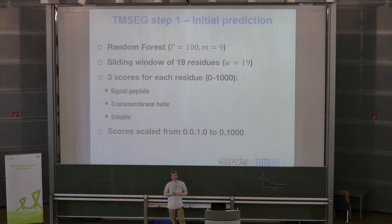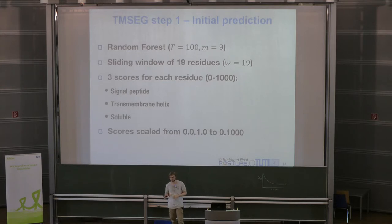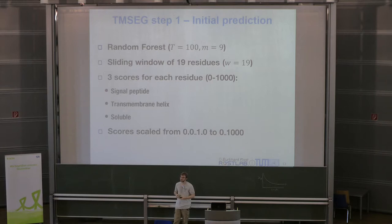The scores I mention are just the probability from the random forest multiplied by 1,000. I did this internally to increase speed by using integers instead of doubles.